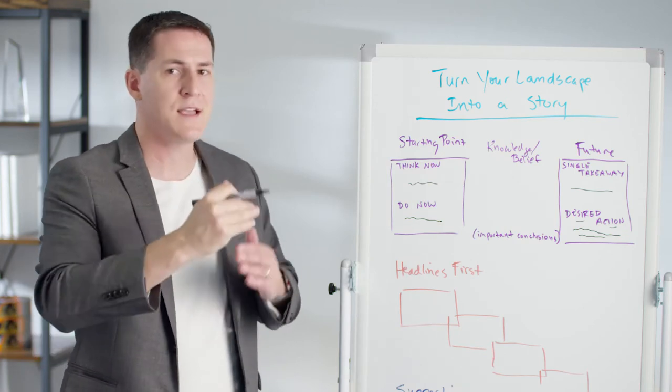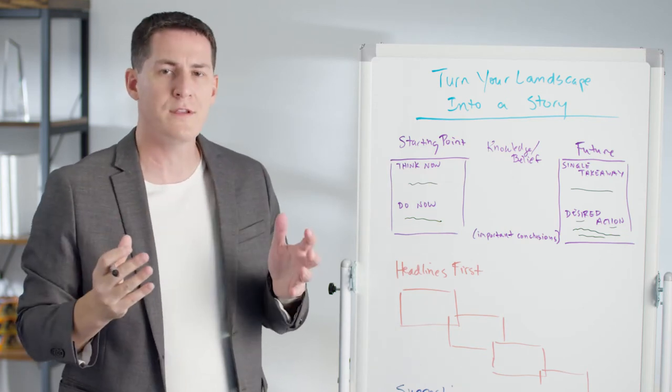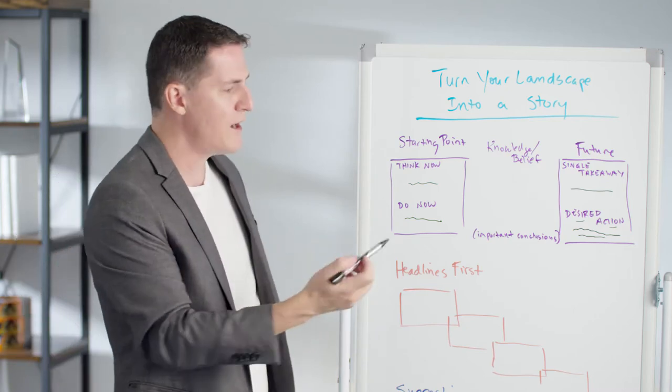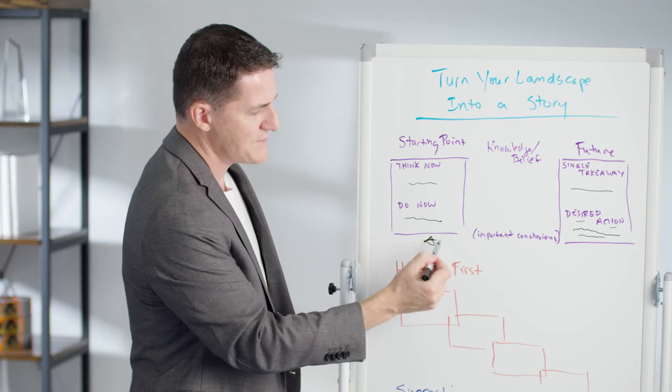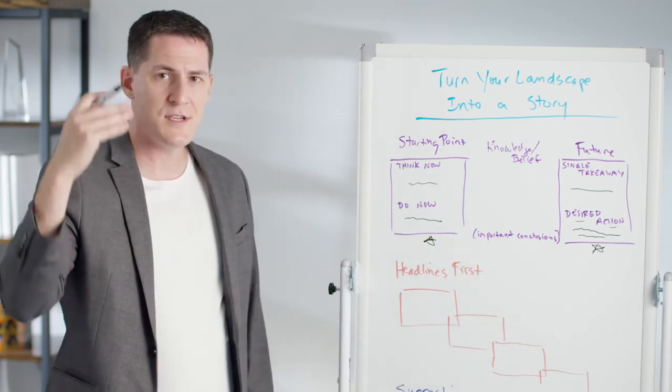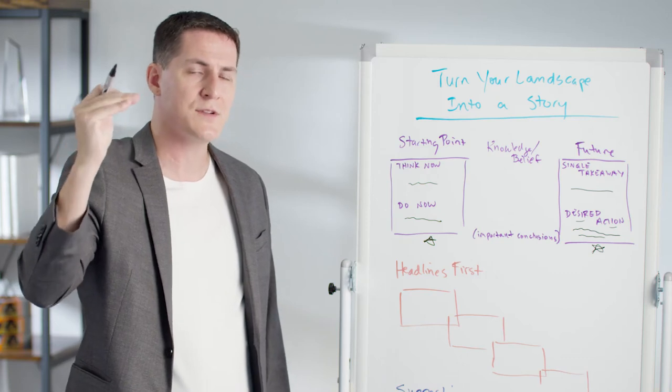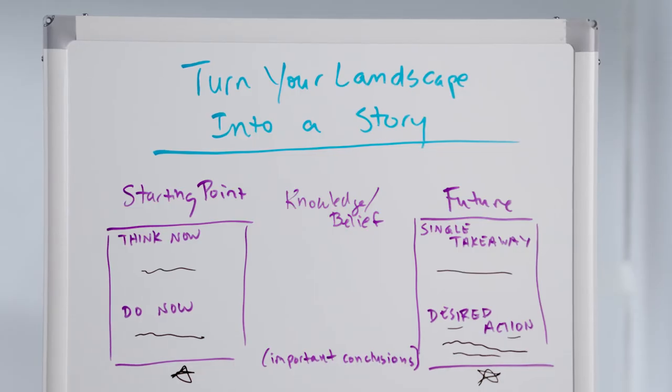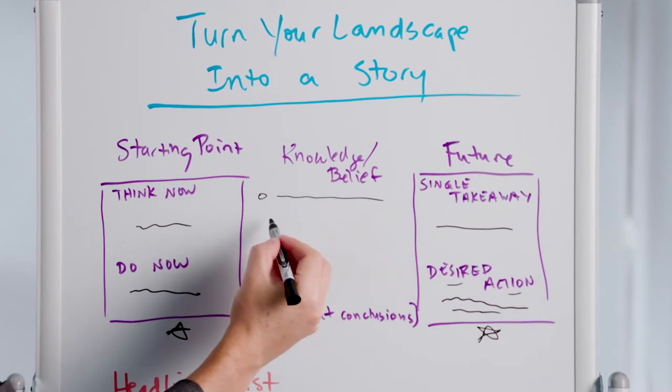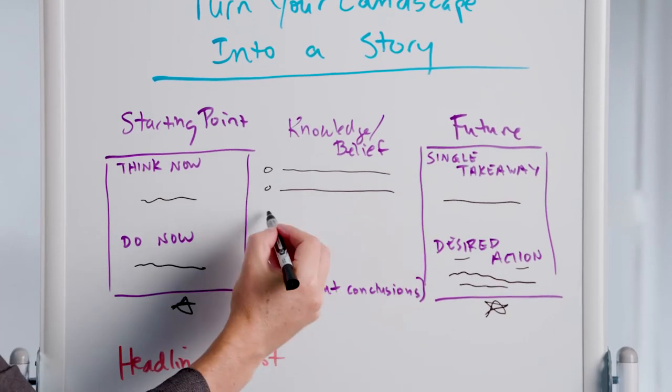Now once you have where you want to take them and what their starting point is, you have to fill in the in-between, and this is what your landscape analysis does. When you have a series of headlines or an outline or a draft or a flow that you're creating, you're creating a story that needs to move the audience from the left side to the right side. And you're going to do it using your headlines and your key takeaways or your key conclusions throughout the landscape analysis.